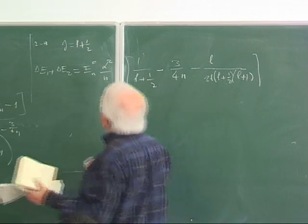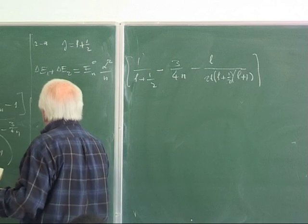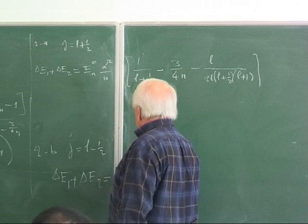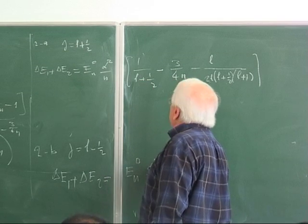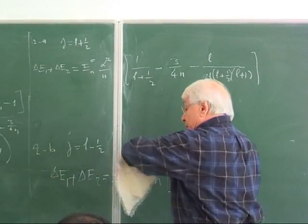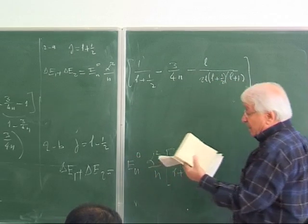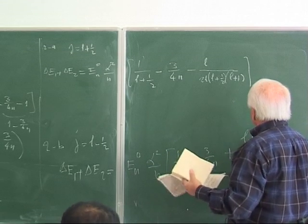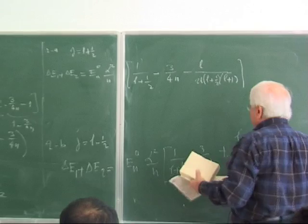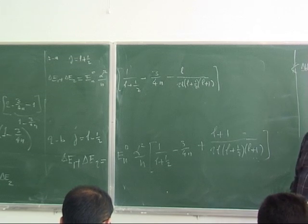Case 2B: J = L − 1/2. The sum delta E1 + delta E2 is E_n0 (alpha²/n) times [1/(L+1/2) − 3/(4n)] plus the spin-orbit contribution of +(L+1) / (2L(L+1/2)(L+1)) from delta E2. These two sub-cases for L ≠ 0 along with the L = 0 case give us the three sets of results, which we will now combine into a compact formula after a short break.